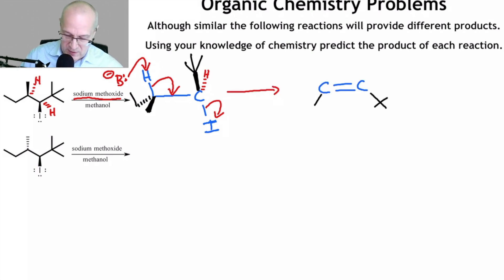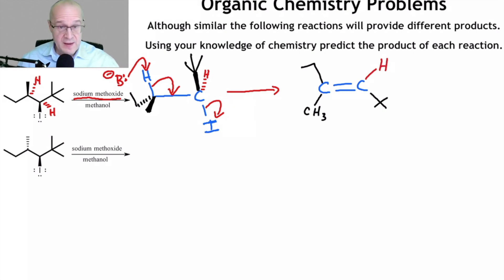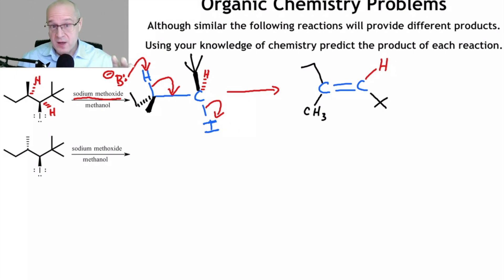This one and that one are on the same face — cis to each other. Let's draw the outcome of that reaction: put the methyl group here, the ethyl group goes back here, and the red hydrogen will be here. That's how you do it — that's how I like to do these problems, thinking in terms of this perspective method.